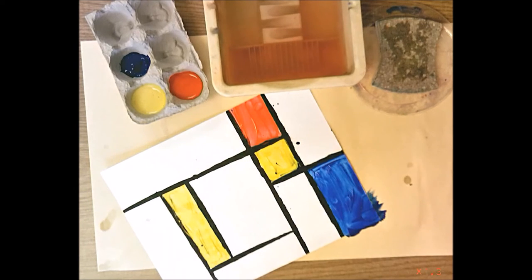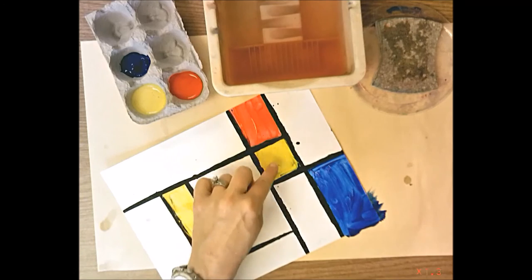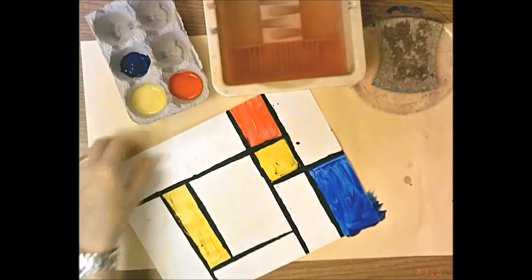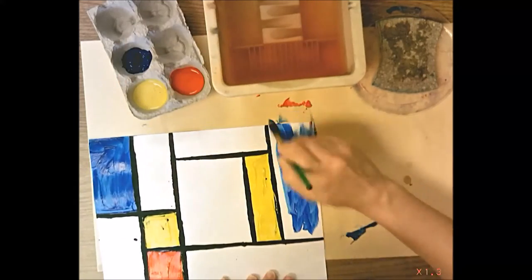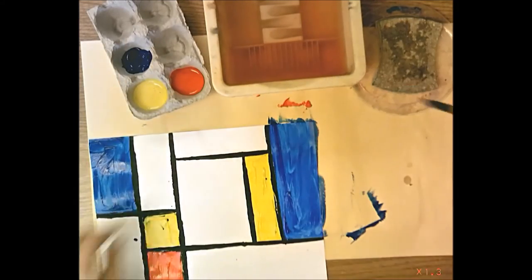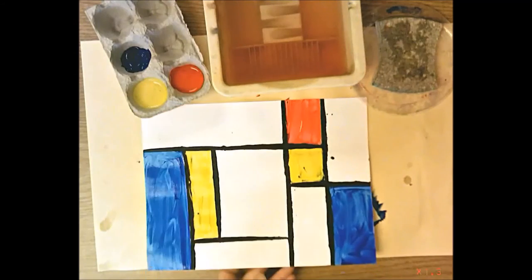All right, so how many boxes do I have painted? One, two, three, four. And I need to paint five boxes, so I need to find another spot where I want to paint blue. Okay, so now I have all five boxes painted.